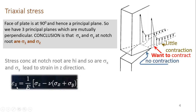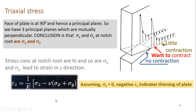The strain in the z-direction, epsilon z, will be negative. What does negative mean? It means the material is contracting in the z-direction — it is shrinking. When the material is being pulled in two directions (x and y), the volume is approximately constant, so in the z-direction it will not expand — it will contract. So these two positive stresses create a negative strain in the z-direction. Mathematically, when we write the expression, the strain in the z-direction will be negative, meaning thinning of the plate in the z-direction.